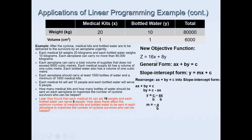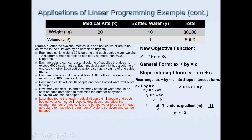Looking at the objective function 16x plus 8y, we can identify a equals 16 and b equals 8. The gradient is therefore negative a over b, which is negative 16 divided by 8, giving a gradient of negative 2. So the gradient of the new objective function is negative 2.